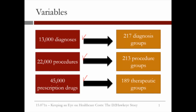Out of the 13,000 diagnoses, we defined 217 diagnosis groups. Out of the 20,000 procedures, we aggregated the data to develop 213 procedure groups. And finally, from 45,000 prescription drugs, we developed 189 therapeutic groups.